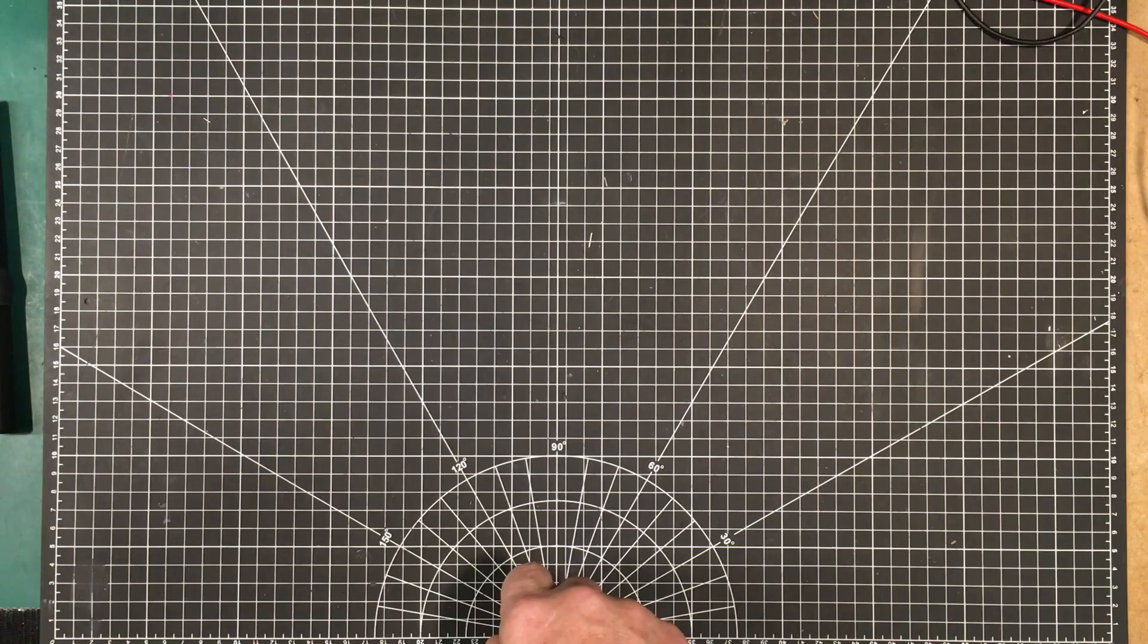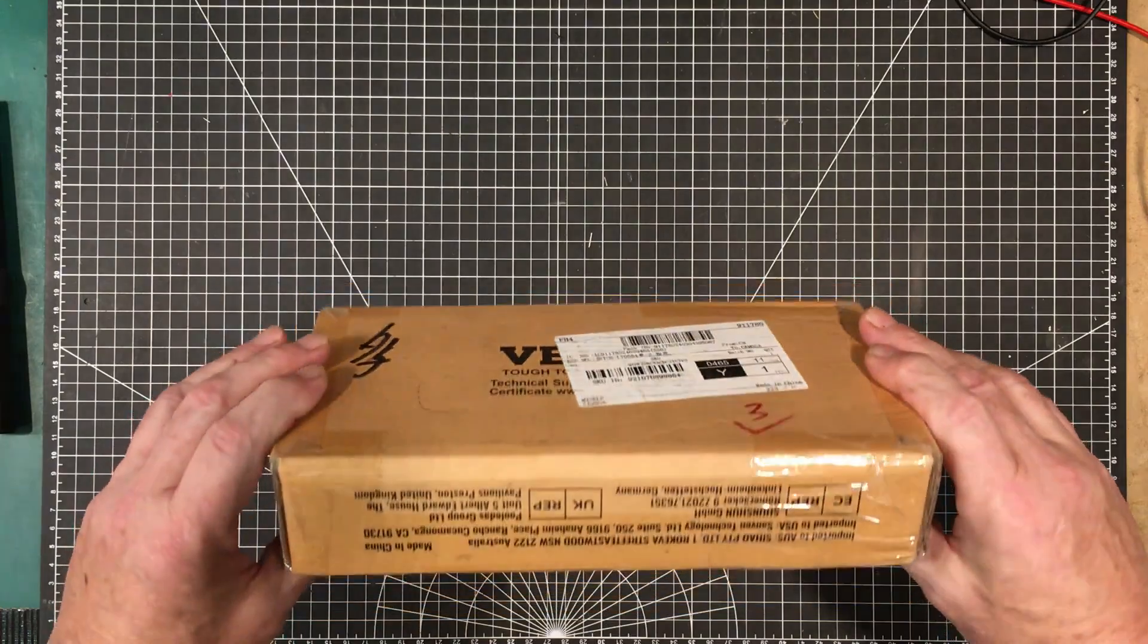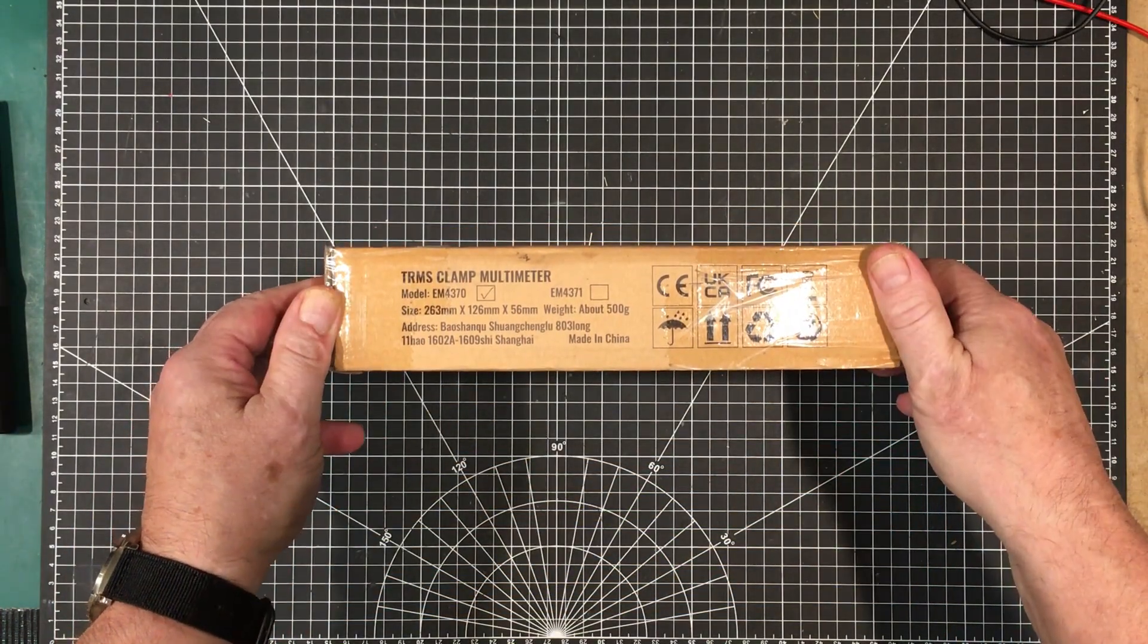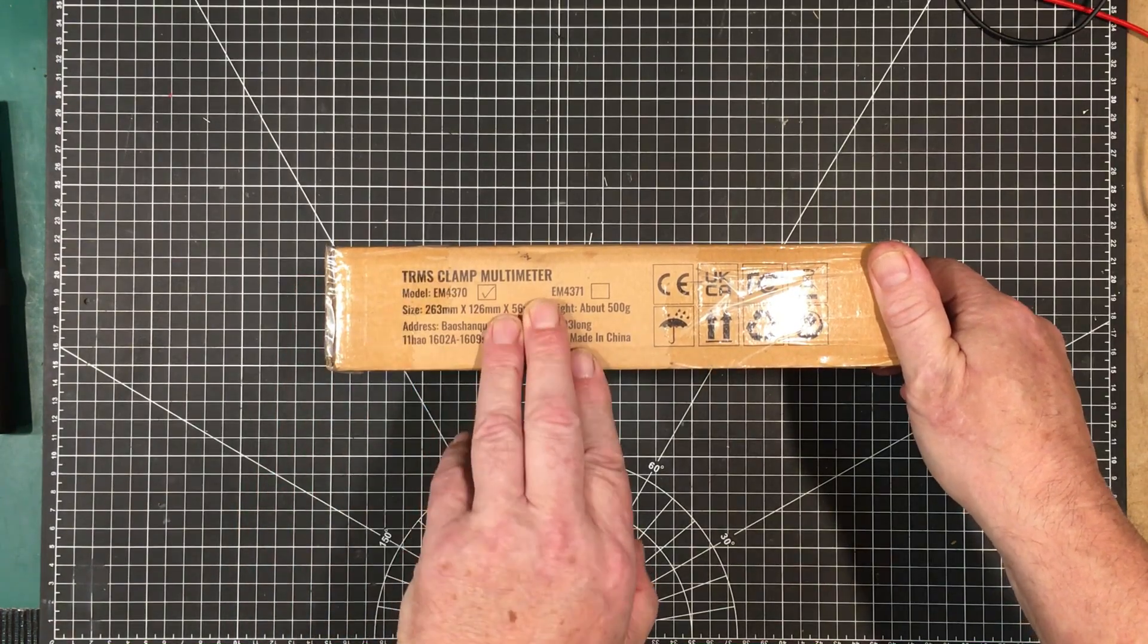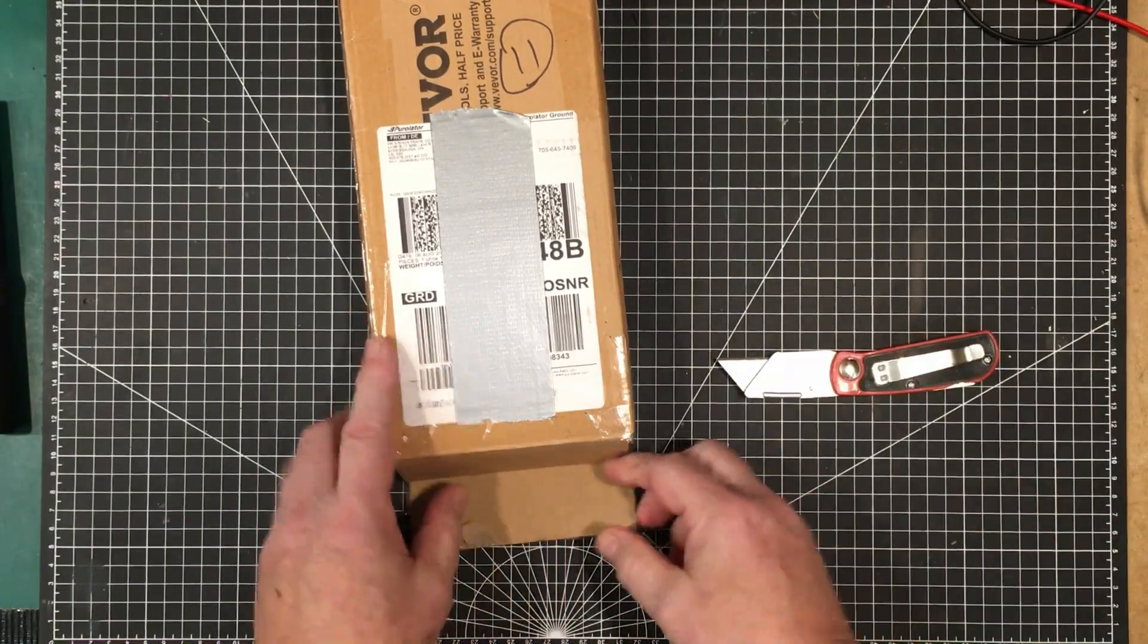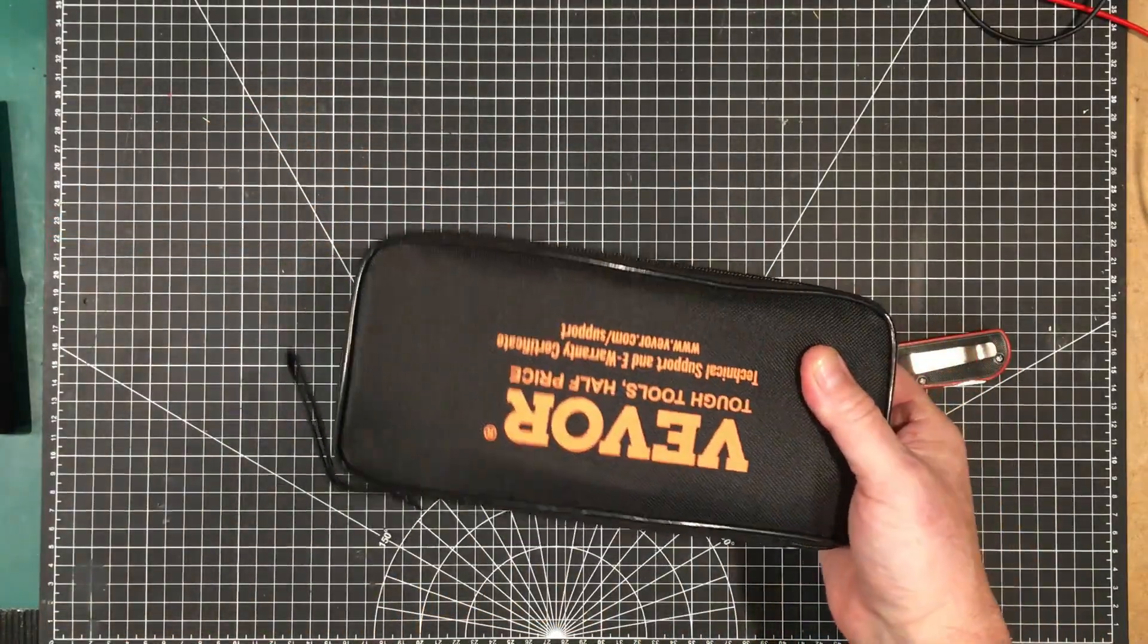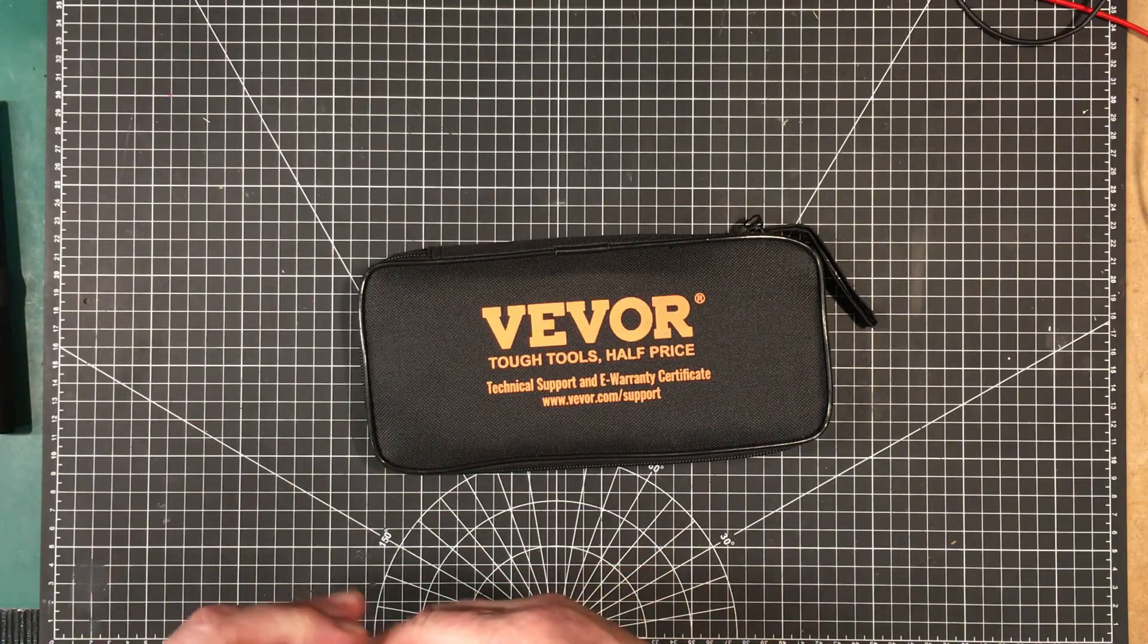Welcome back to the lab folks. The reason for this video is that VEVOR sent me a meter. It's the EM4370 true RMS clamp multimeter. There it is. Comes in a nice pouch. Tough tools half the price.